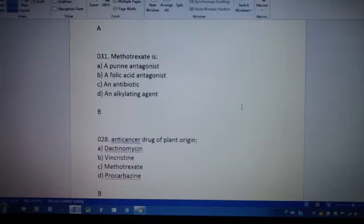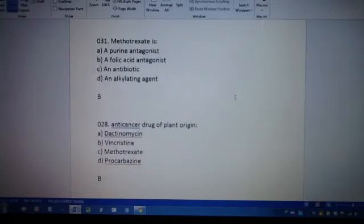Next one. Methotrexate is A, a purine antagonist. B, a folic acid antagonist. And C, an antibiotic. And D, an alkylating agent. The answer is B. It is a folic acid antagonist.